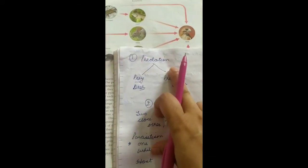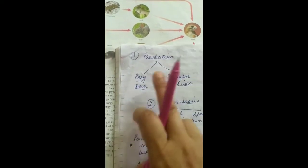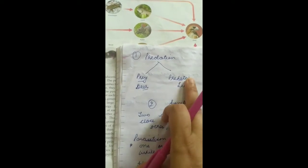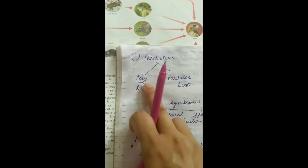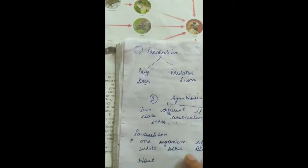First of all, predation. Predation means one prey is there and one predator is there. For example, in the food chain, deer is a prey and lion is the predator, which eats the prey. Prey is the organism or the animal which is being eaten by the predator.